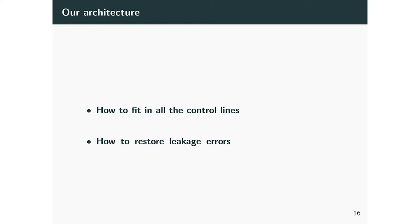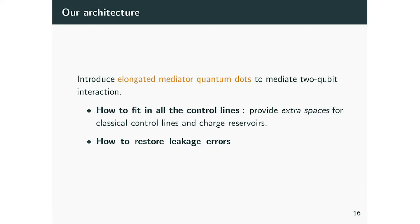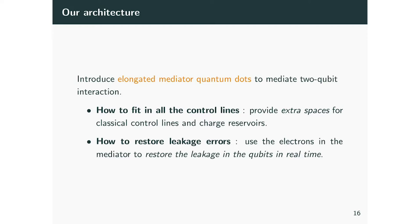Our solution is actually quite simple. We introduce elongated mediator quantum dots to mediate the two-qubit interaction across the whole quantum dot array. When you introduce this kind of mediator quantum dot, it automatically spaces out the data dots and ancilla dots, providing more space to fit in all the control lines and classical electronics. Additionally, the extra electrons in these mediator quantum dots can actually relax into a quantum dot if that dot has leaked — providing a passive pathway to restore leakage in the qubit quantum dots.